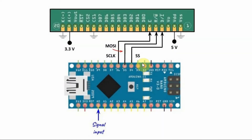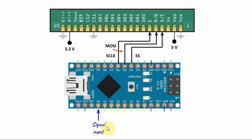In this video, the ST7920 is interfaced with the Arduino using SPI connections, where the slave select is connected to pin D4, the master output slave input is connected to D5, the serial clock is connected to D6, and the analog input signal is fed through A0.